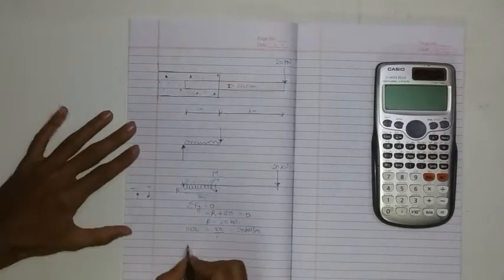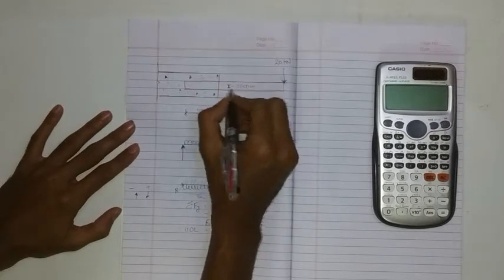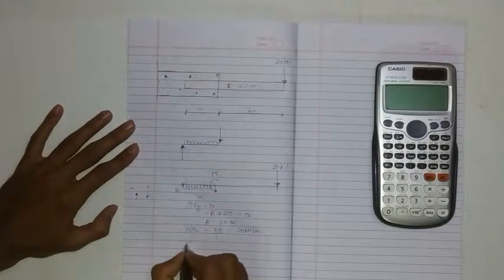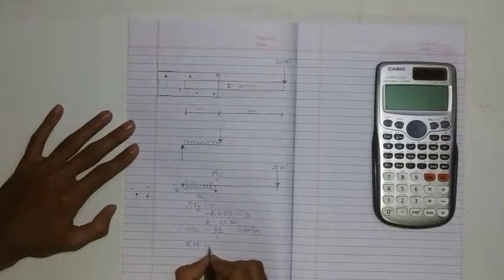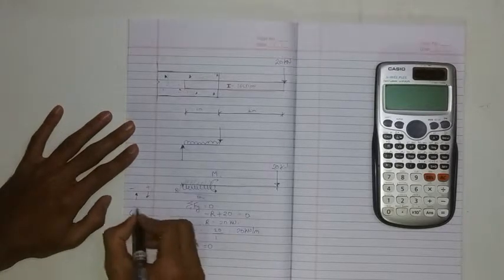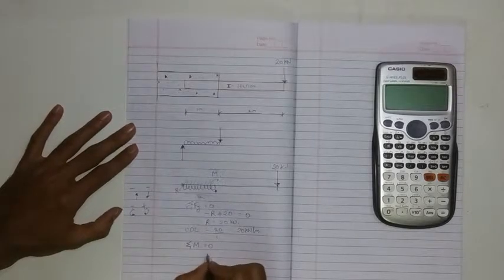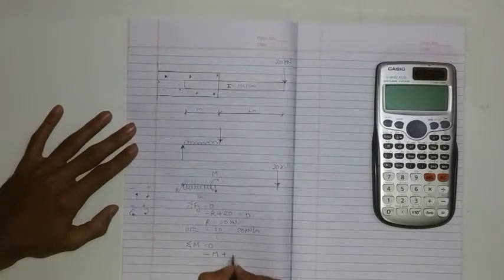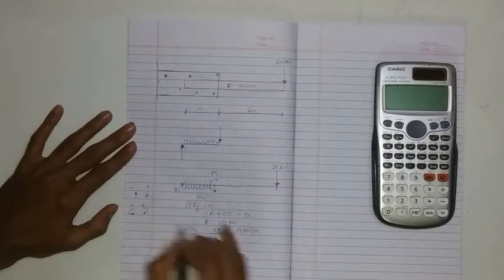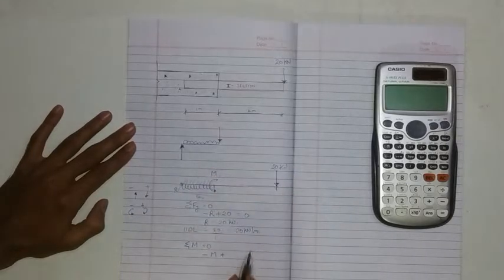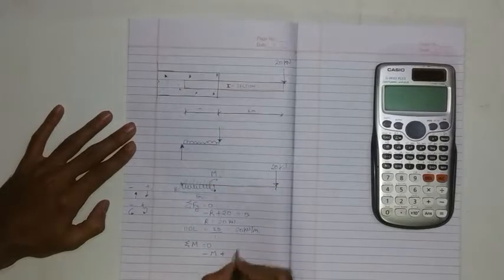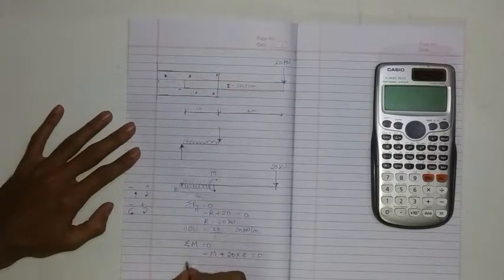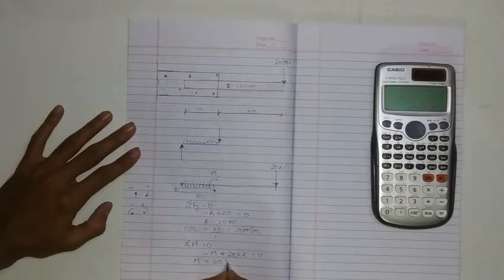Next is to find this moment. For this joint to be stable for the design purpose and serviceability conditions, I'll have to make sure that summation of all moments at that point is equal to zero. My convention is this way is negative, this way is positive. I have this moment, minus M, plus the UDL: 20 into the lever arm is 2 meters, which is equal to zero. Therefore M is equal to 40 kilonewton meters.